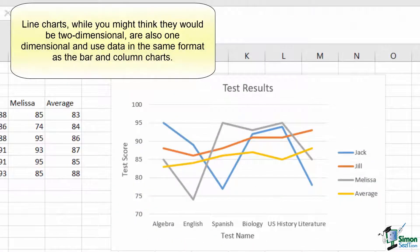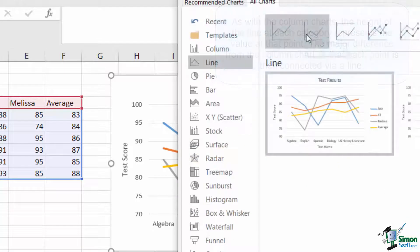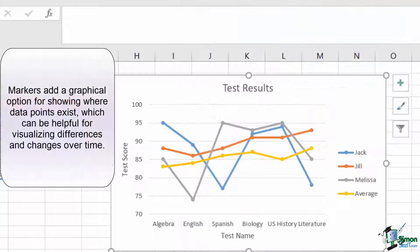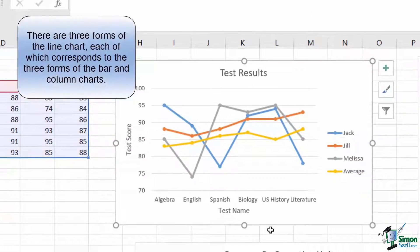Line charts are a slight modification to the column chart approach. Rather than creating a column out of a value, a single point at the top of where the column would be gets set, and then lines are connected to each point to develop the graph out. Line charts can be defined with or without markers, where markers simply indicate where the observed point is. The difference is entirely visual, however, I often find the markers to be helpful.